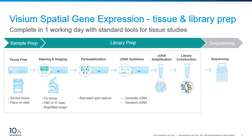The workflow for Visium takes one day from tissue prep to sequencing-ready libraries, and is relatively straightforward, as you can see in this slide. To start, prepare your fresh, frozen, OCT-embedded tissue sections with a cryostat, and mount them onto the Visium slide. Then, stain these samples using either our H&E or immunofluorescence protocol, and capture images of your samples.